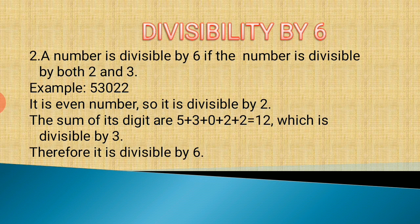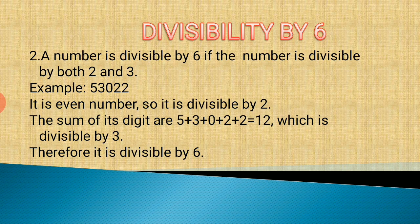Next is divisibility by 6. A number is divisible by 6 if it is divisible by both 2 and 3. For example, consider the number 53022. It is an even number because it ends with 2, so it is divisible by 2. The sum of its digits is 5 plus 3 plus 0 plus 2 plus 2, which is 12, and 12 is divisible by 3. Therefore 53022 is divisible by 6.